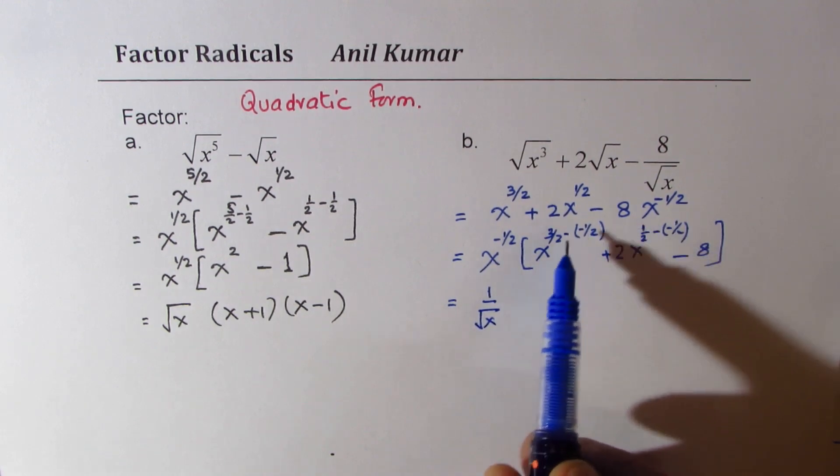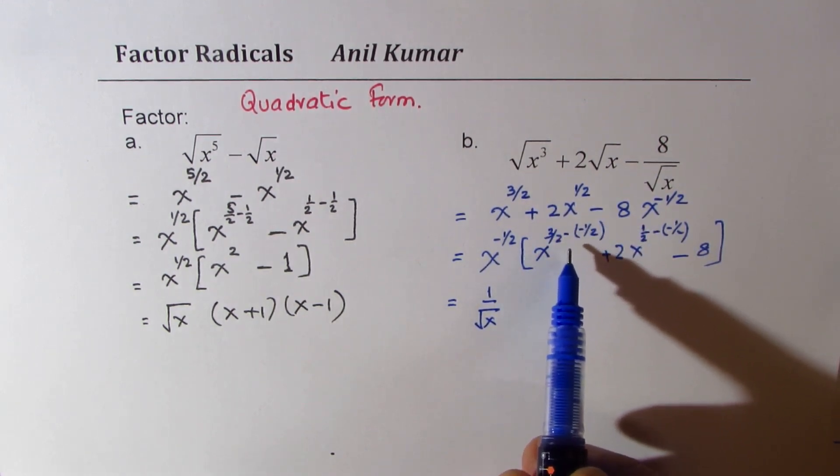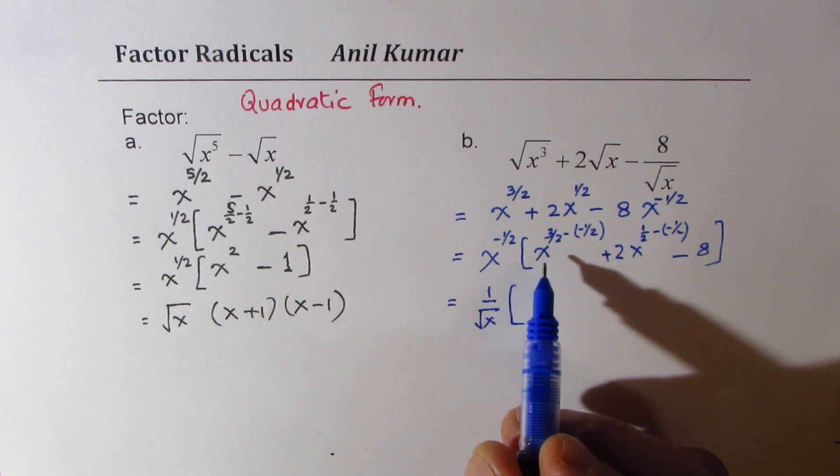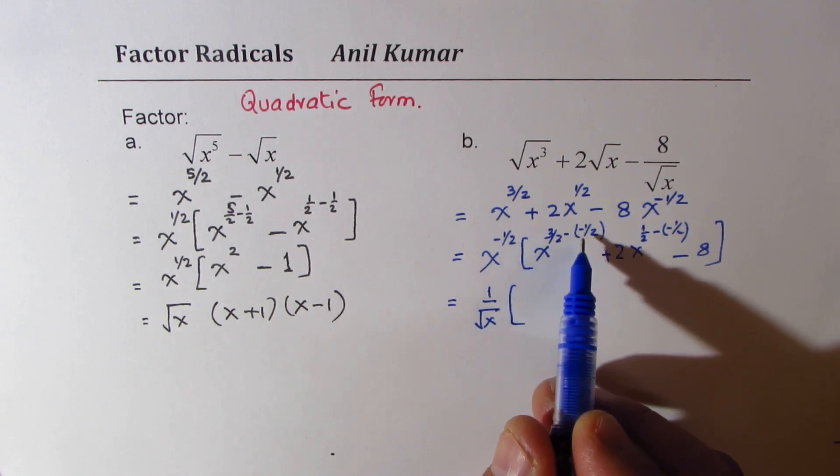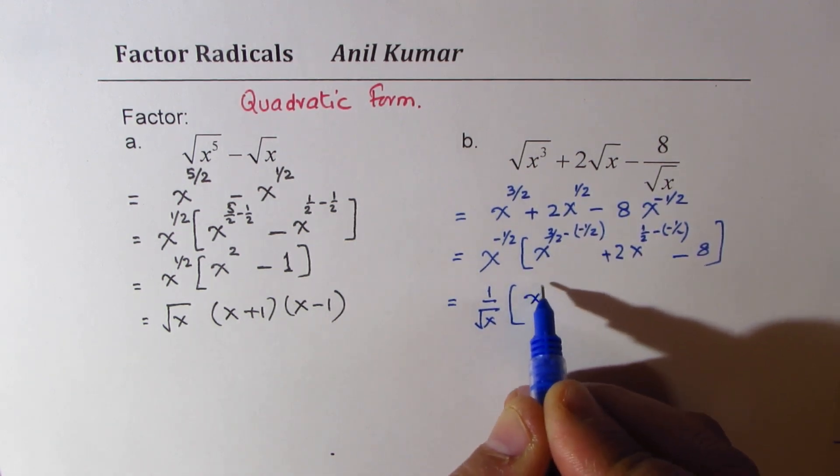So here we have x to the power of minus half, which really means 1 over square root x. Now, it becomes simpler to do the exponents with the rules, and therefore, we prefer to convert them to the exponential form. So here, half is added to 3 by 2, so we get x to the power of 4 over 2, which is x squared.